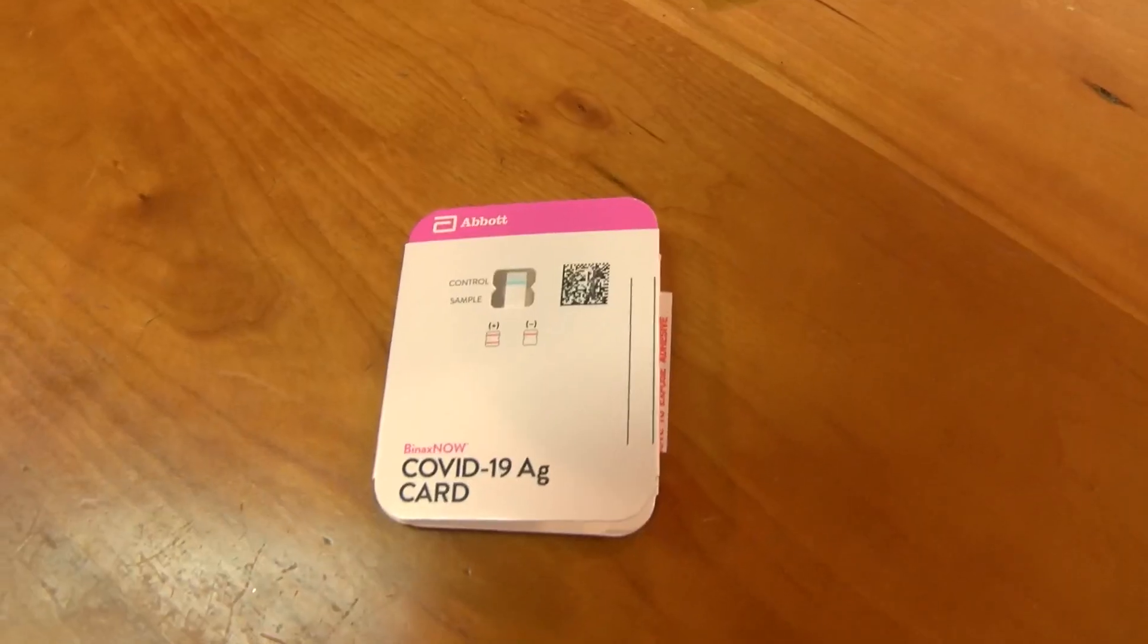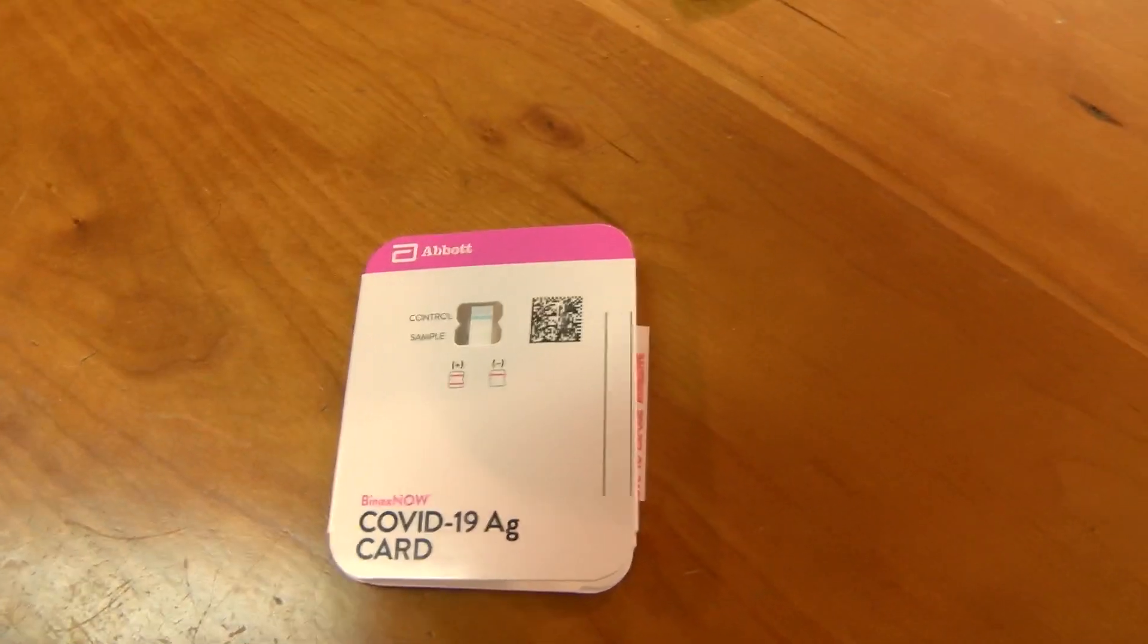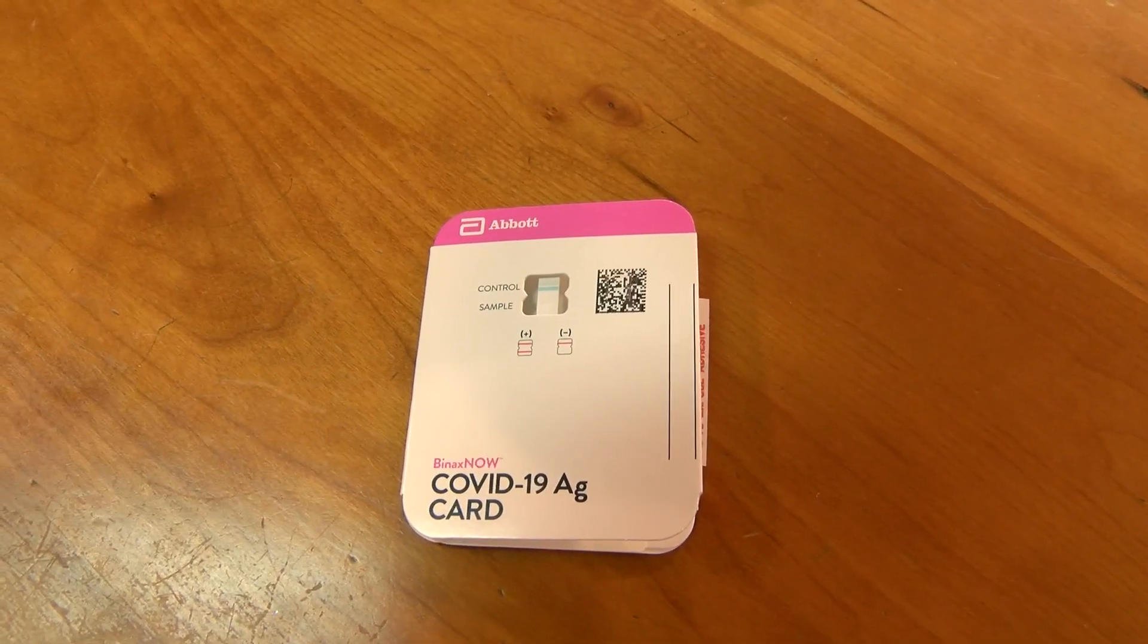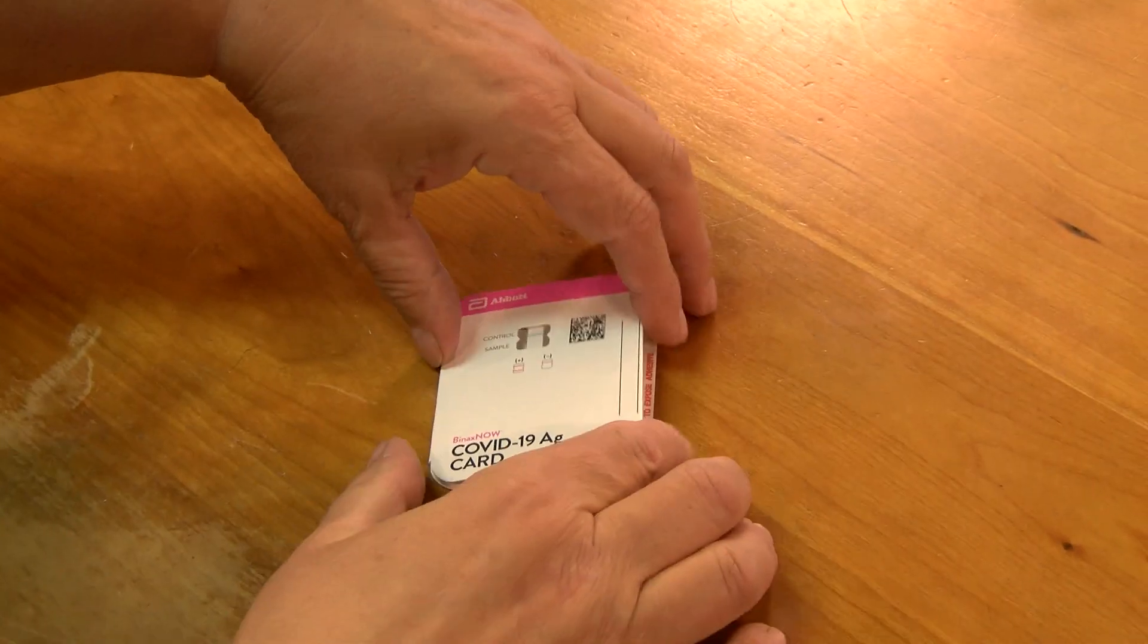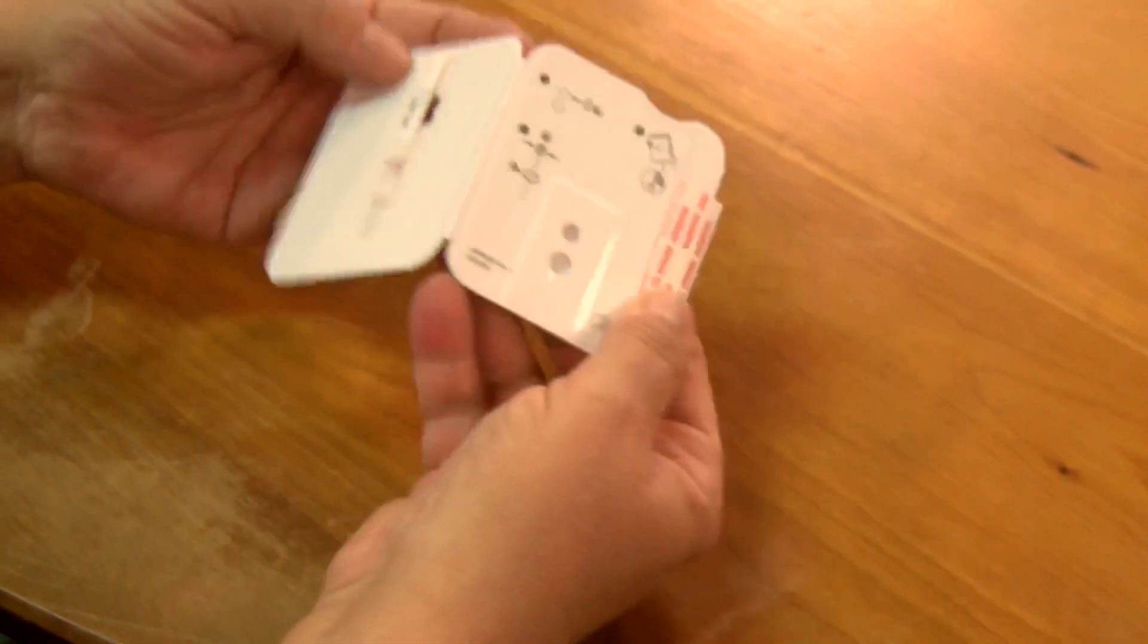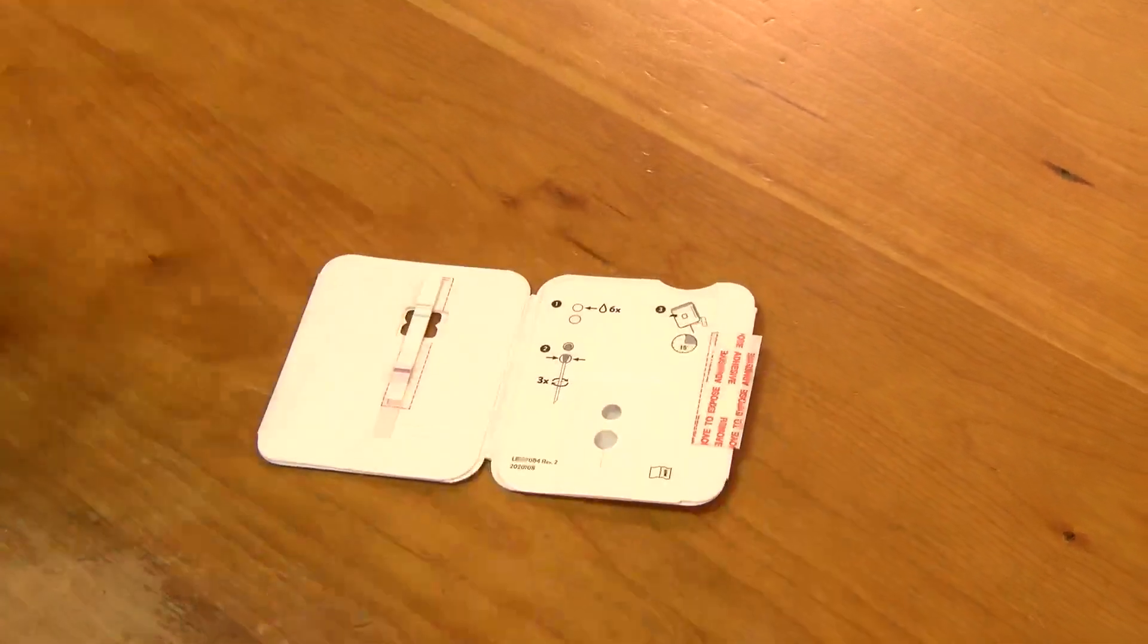Make sure that the blue line is there in the window. If the blue line is not there, do not use this card. Open the card flat on the table and keep it flat for the whole test.